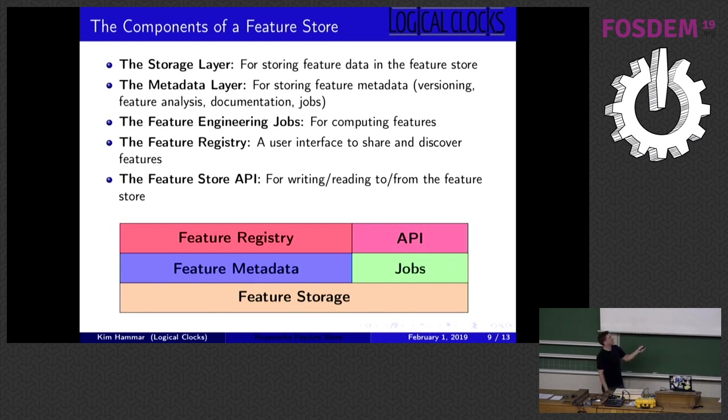And then the final component is the API. This is what we use inside our machine learning pipelines to read and write to the store. And this is just regular client side libraries that we use. And I'll show you a quick example of how our API looks like.